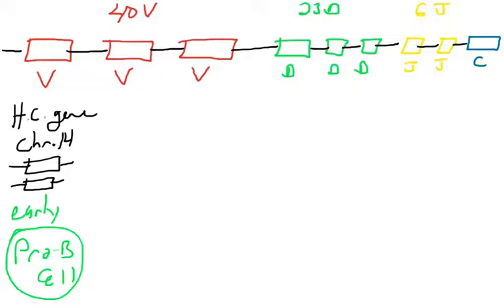This is the germline configuration. When B-cells start out their lives, in a stage called the early pro B-cell, this is what your DNA looks like. This is the DNA that you inherit from either your maternal or paternal chromosome. Nothing's been cut, nothing's been touched, nothing's attached, nothing's been removed.